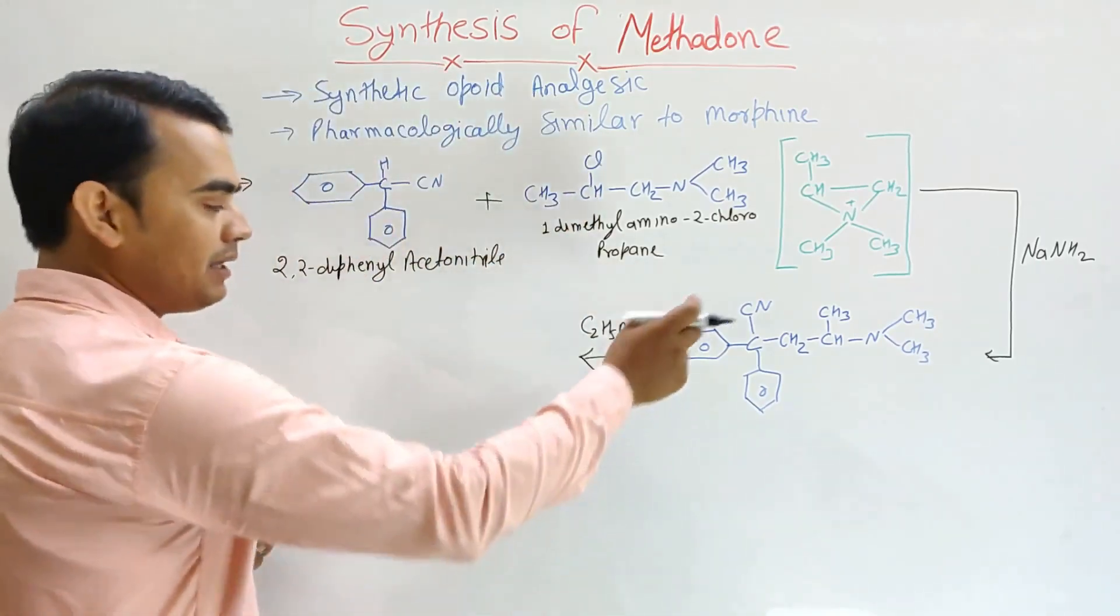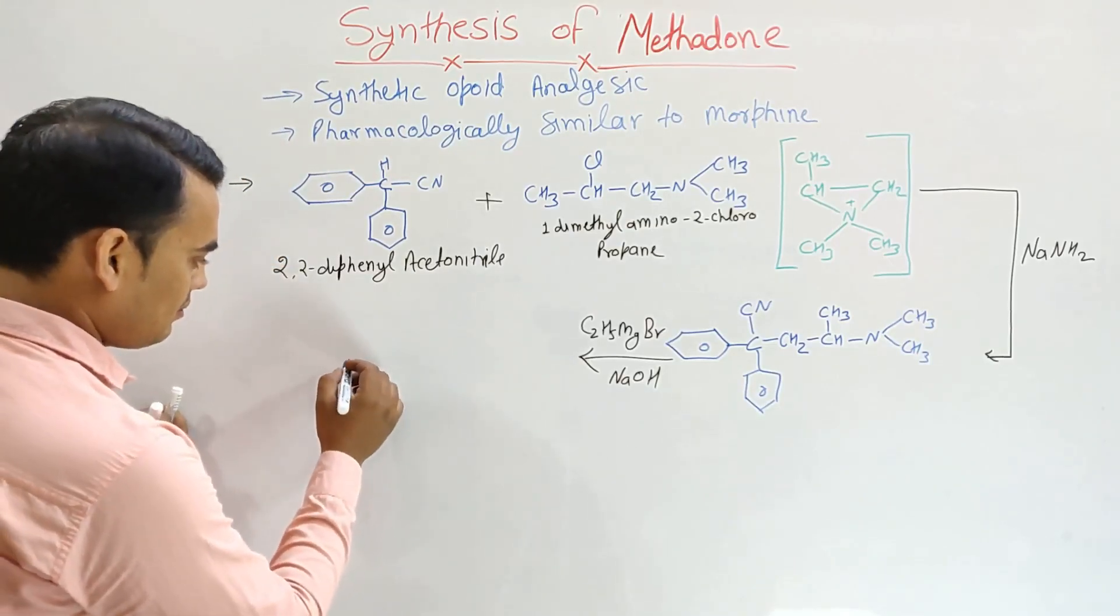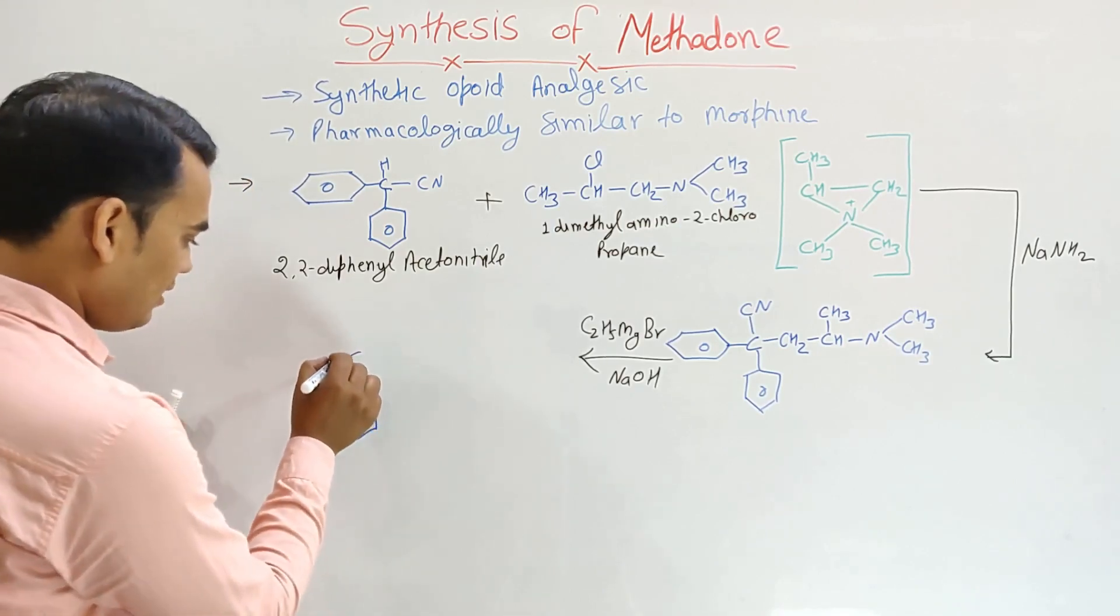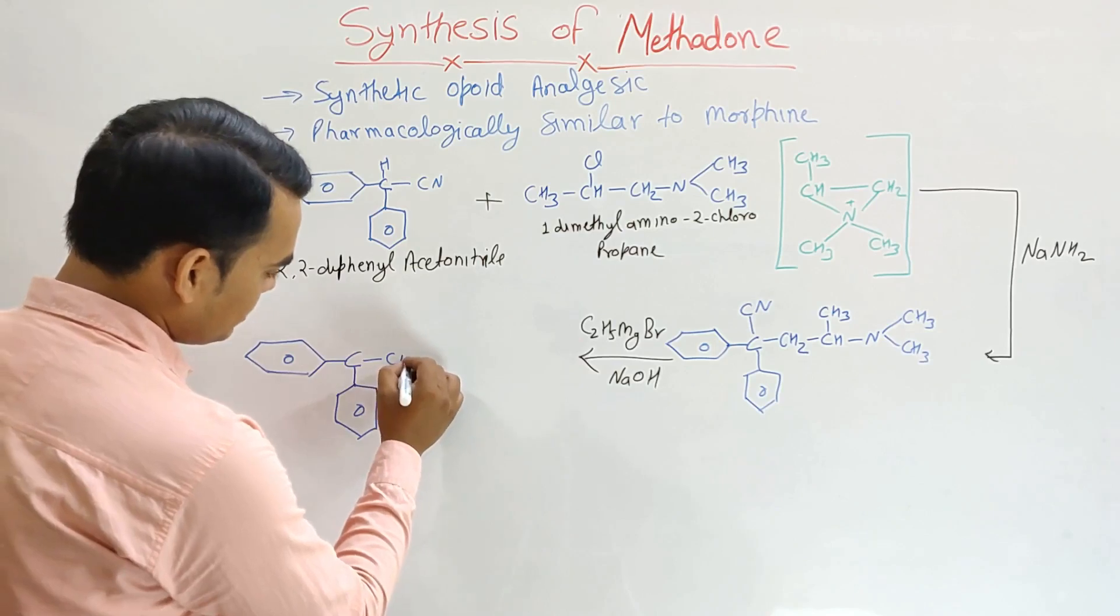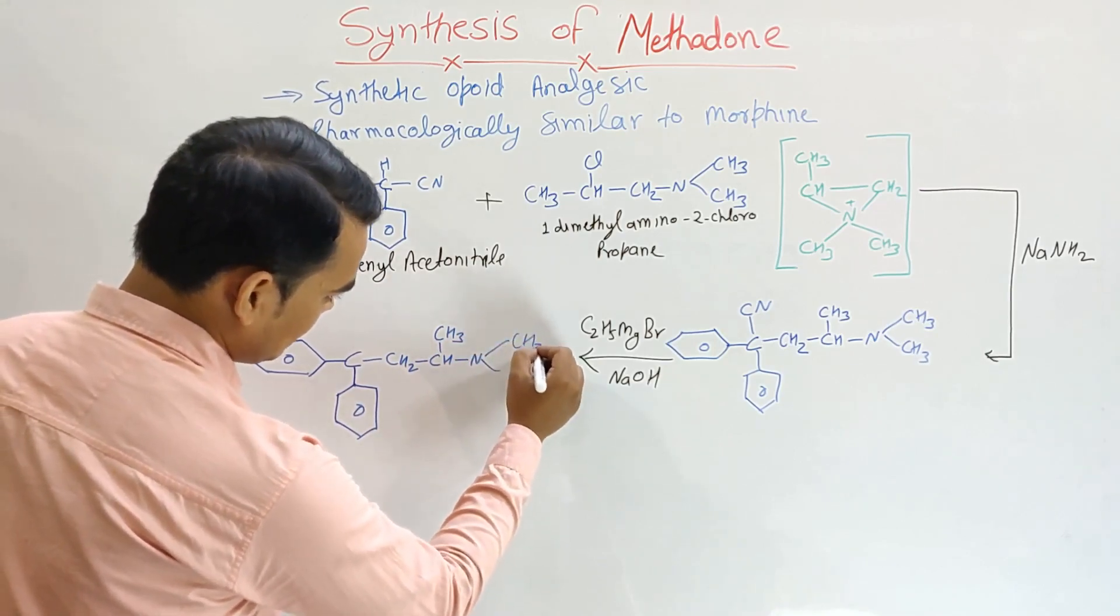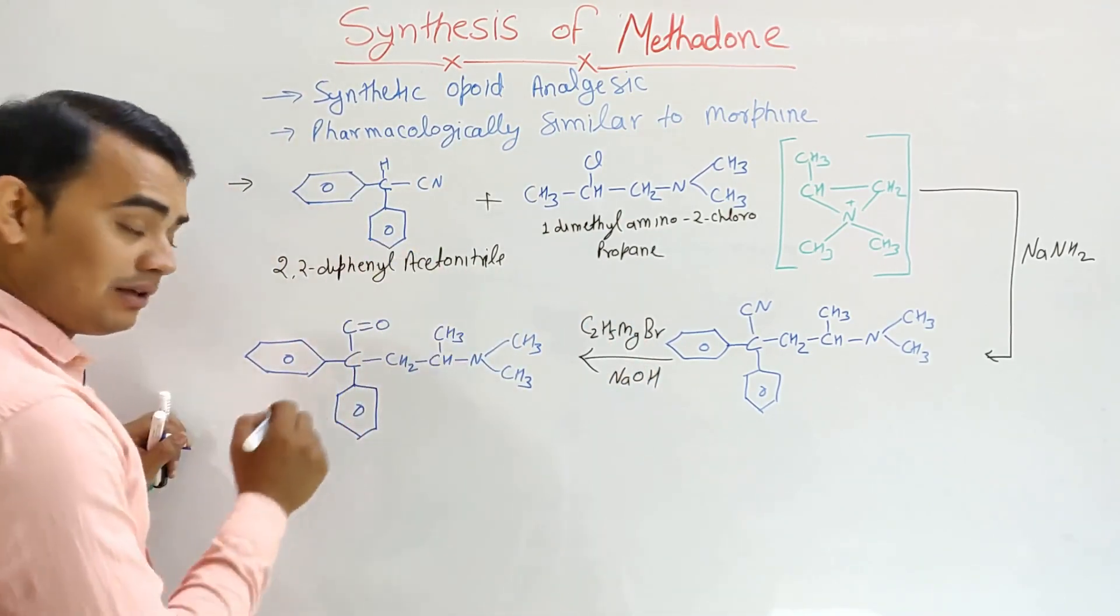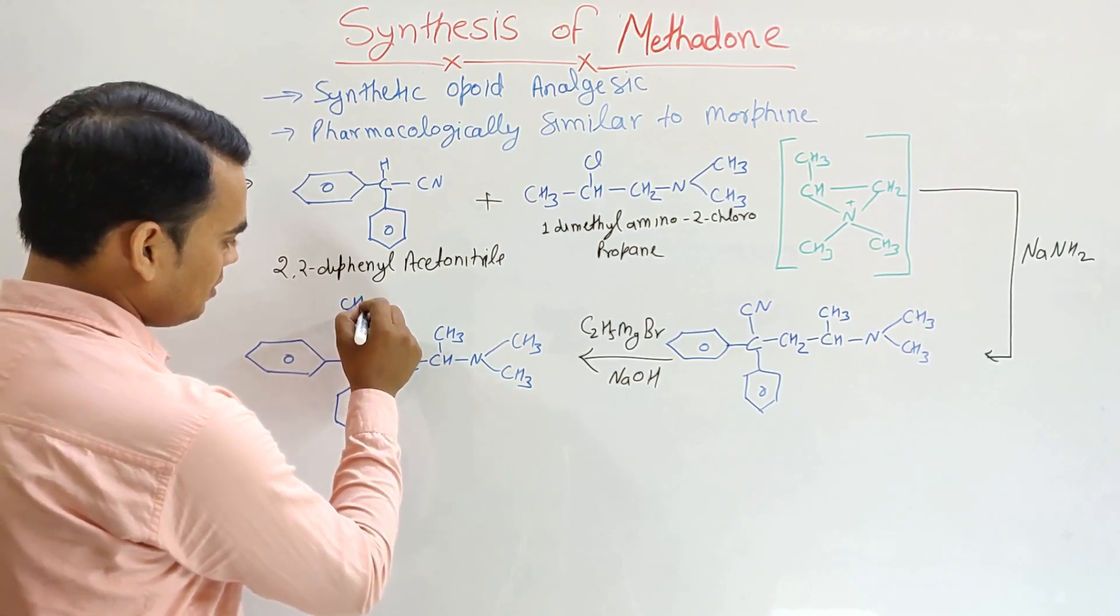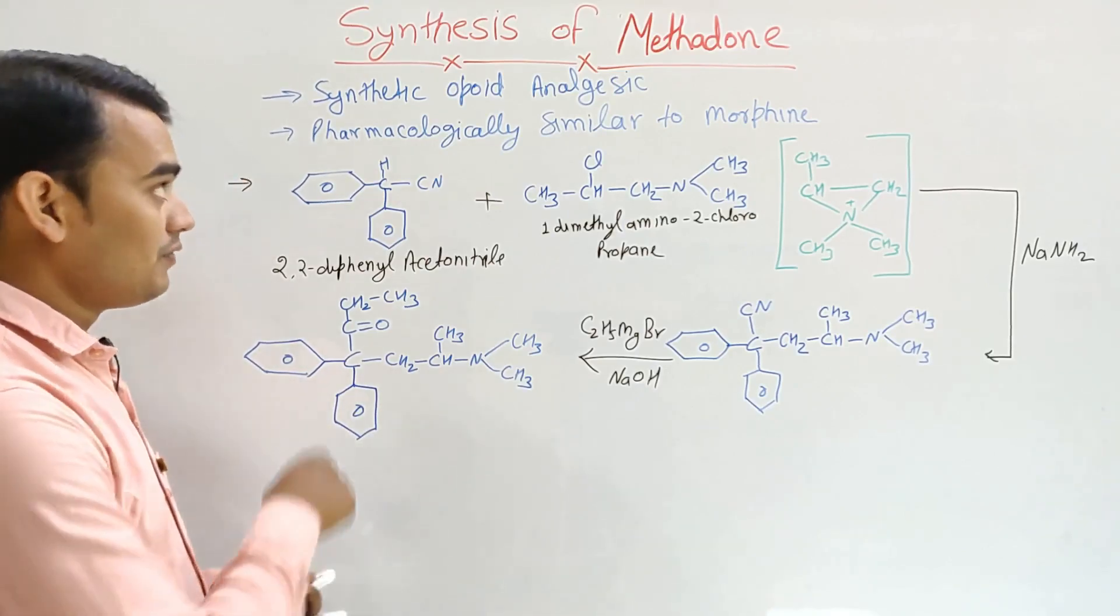Then what happened, this cyanide group mainly will be changed and it forms, have the phenyl ring here, another phenyl ring. Here same as it is previously, CH2, CH, CH3, N, and it has the dimethyl here. Now this CN will be changed and it forms the carbonyl group with this CH to CH3. So this is the basic structure of the methadone.